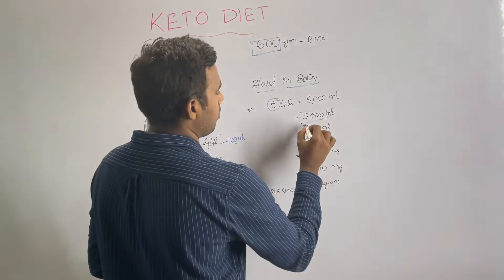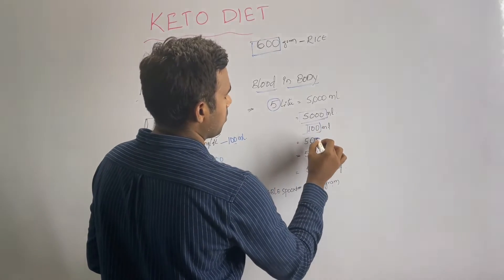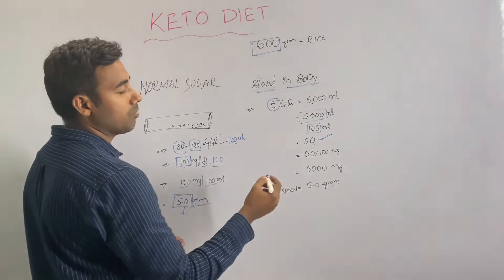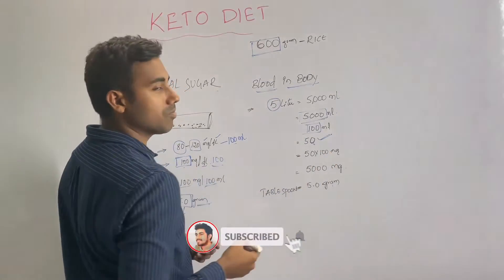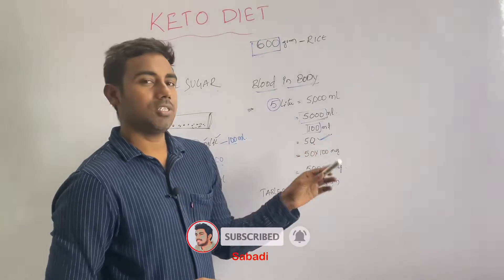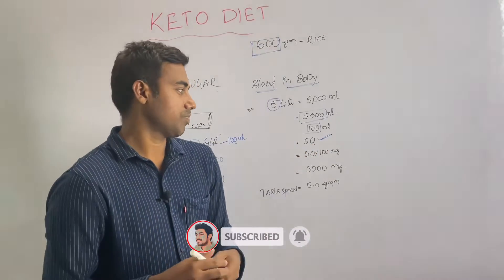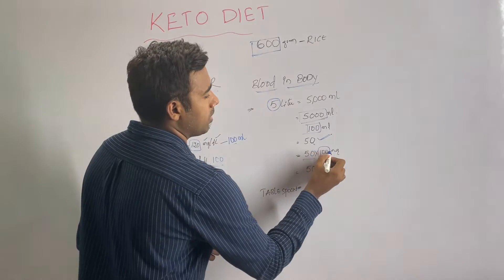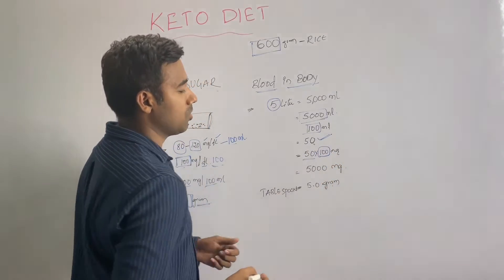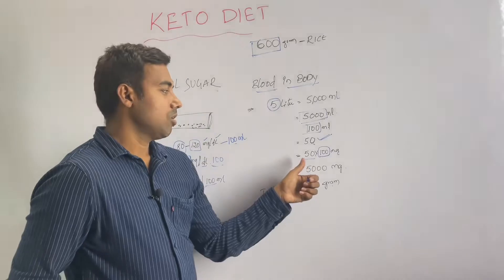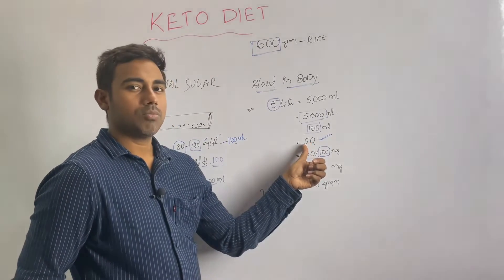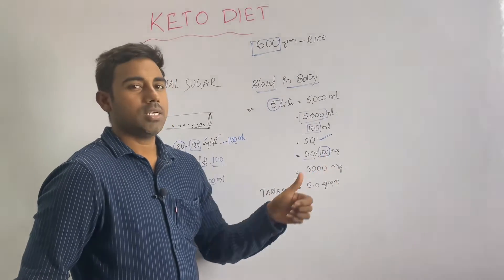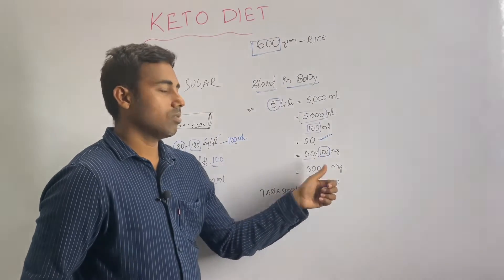So we have 50 units of 100 ml each. With 100 mg per 100 ml, that gives us 50 times 100 mg, which equals 5,000 mg.